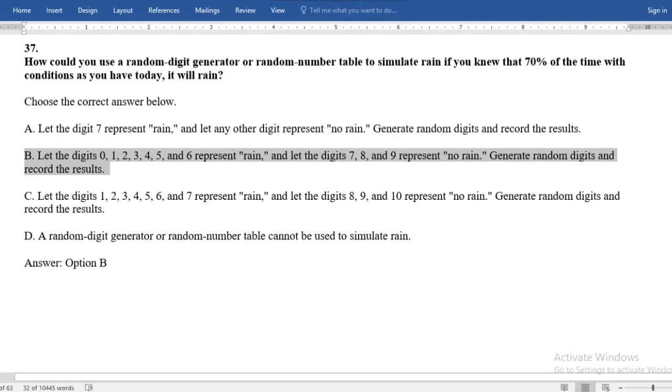And 70% is 0, 1, 2, 3, 4, 5, 6. And see, 30% is 7, 8, 9, represents no rain. So the correct answer is option B.